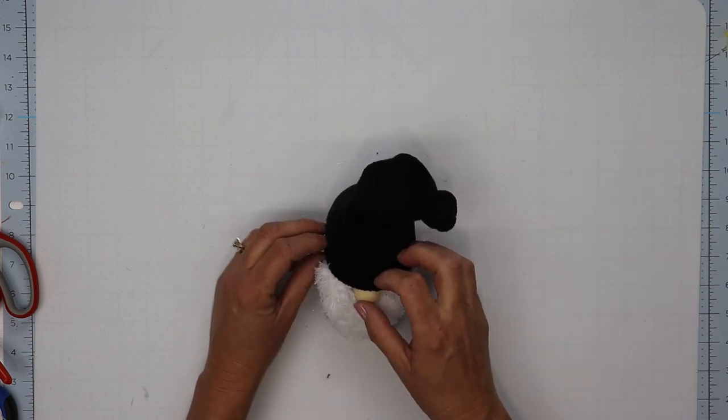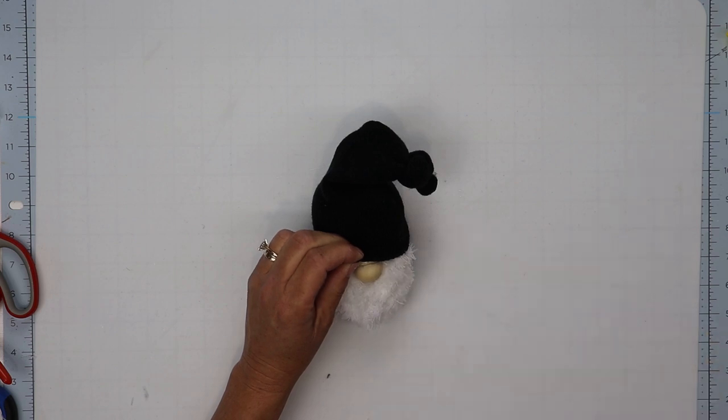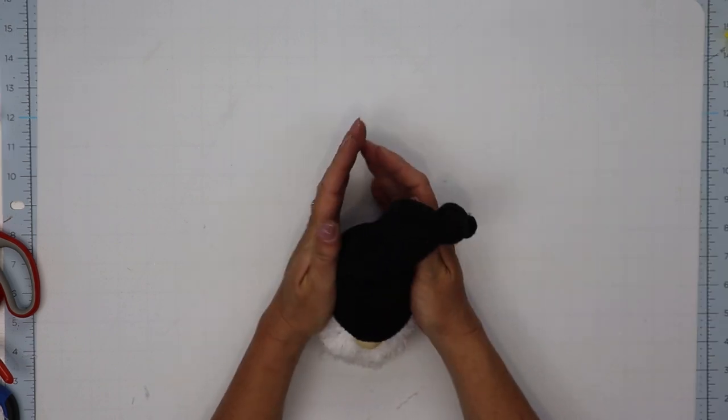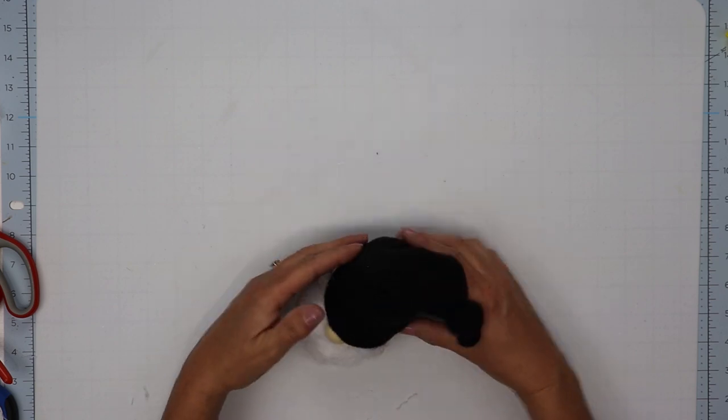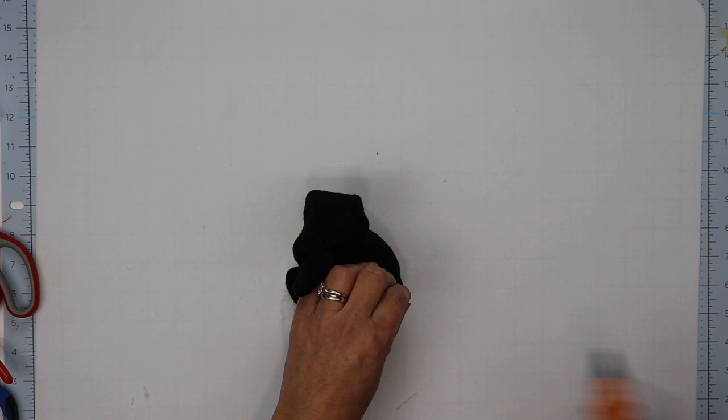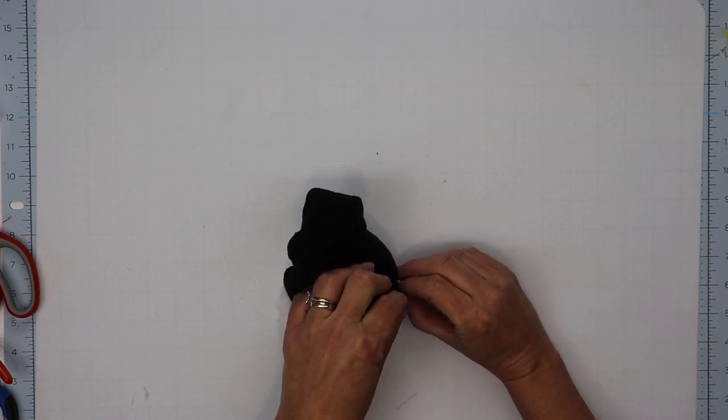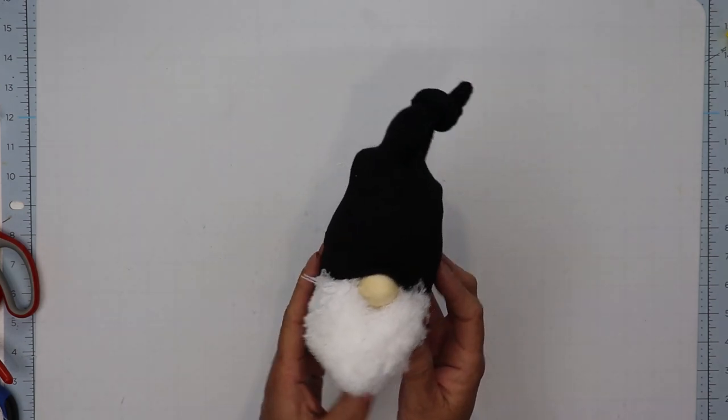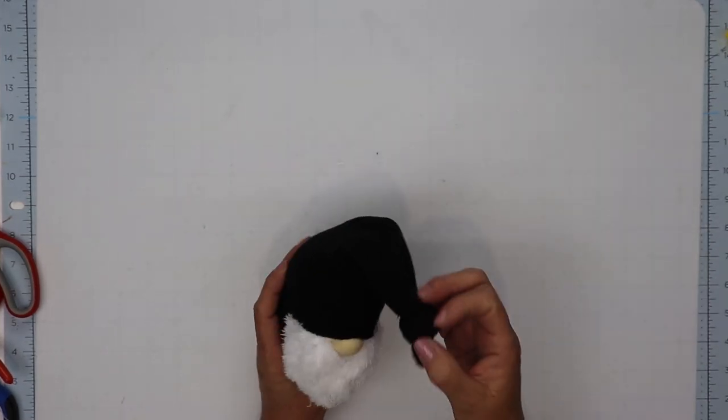Once I determine exactly where I want to place that, I'm going to hot glue it, hold it in place, and then pull the sock down about halfway of the bead, glue that down on the top and the sides of the nose to make sure it stays in place, and then glue the back of the sock to the bottom of the gnome head just to hold that in place. So I wanted my stocking cap to just fold over in the front.